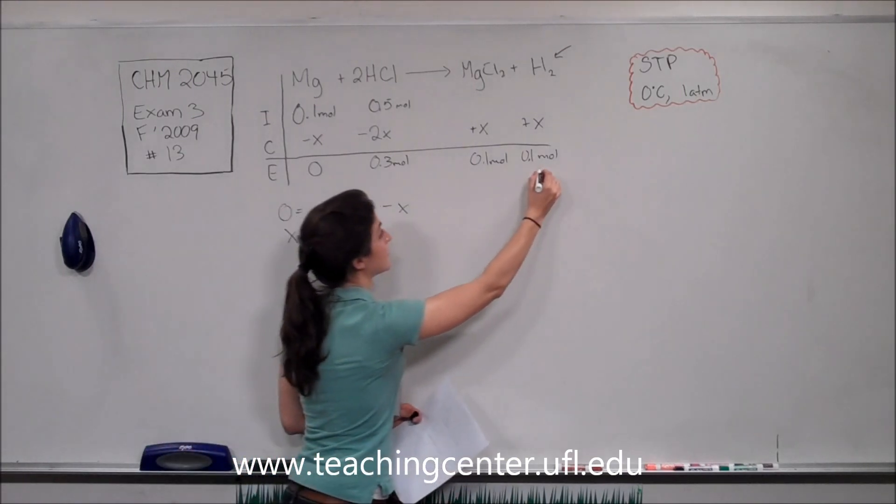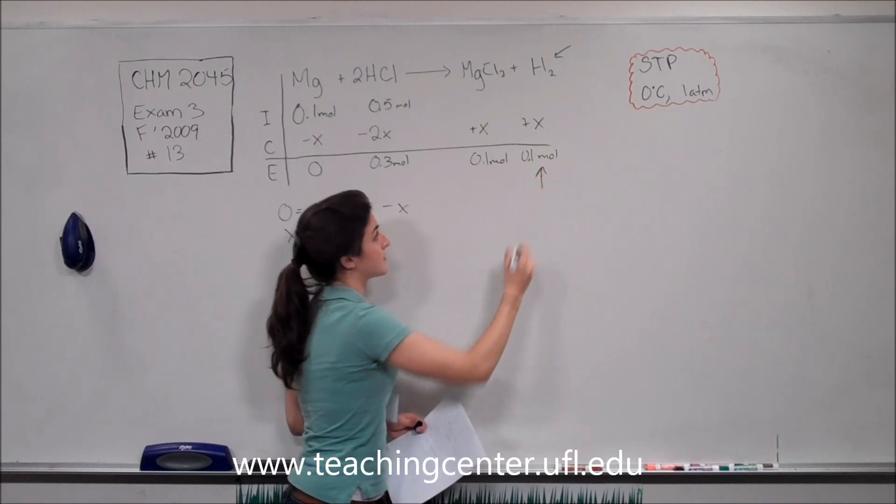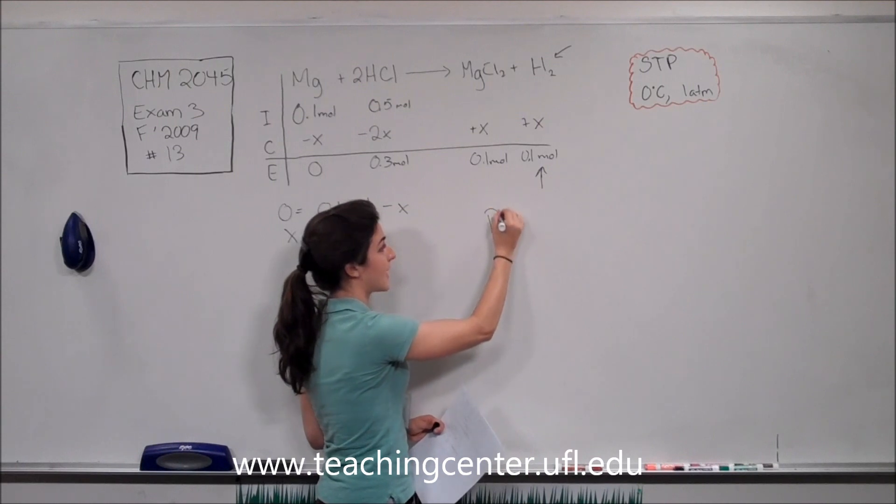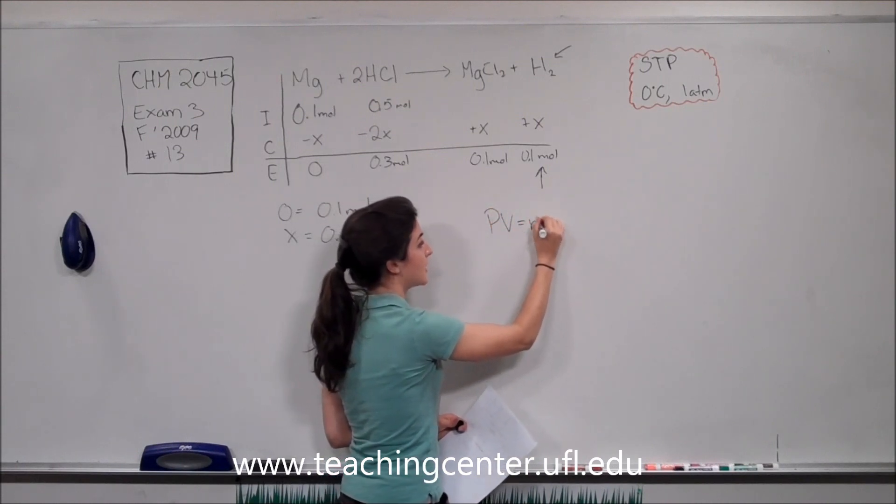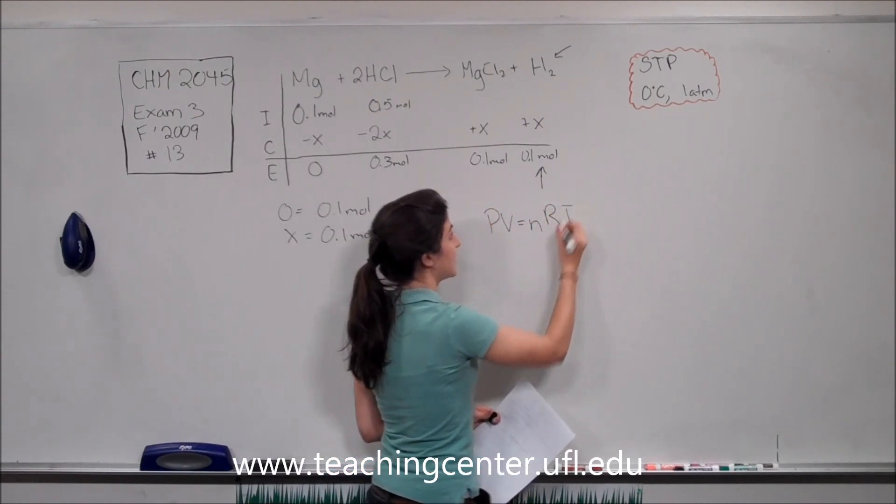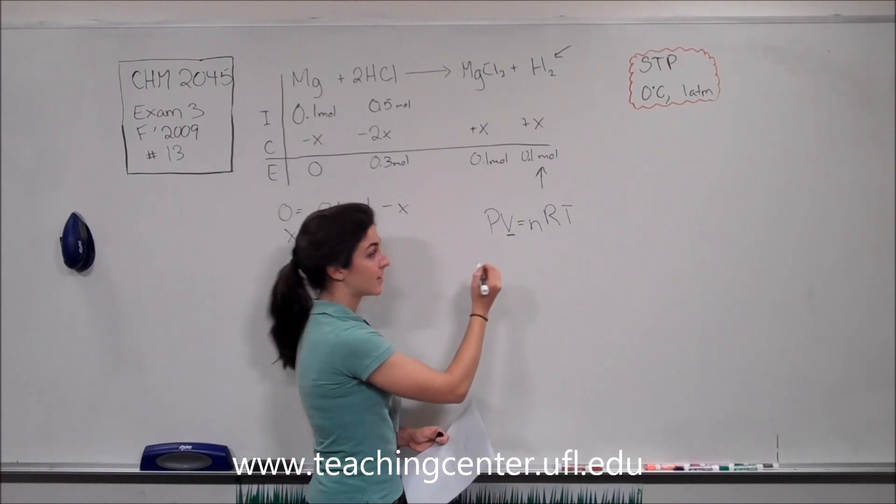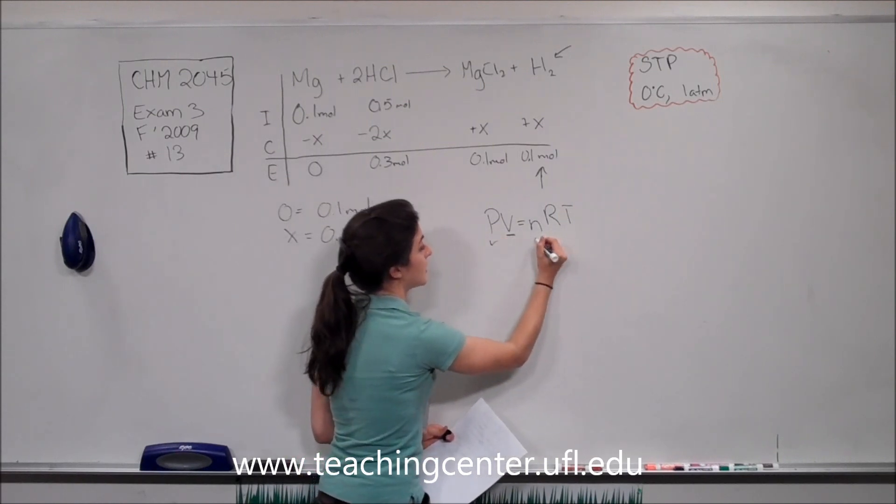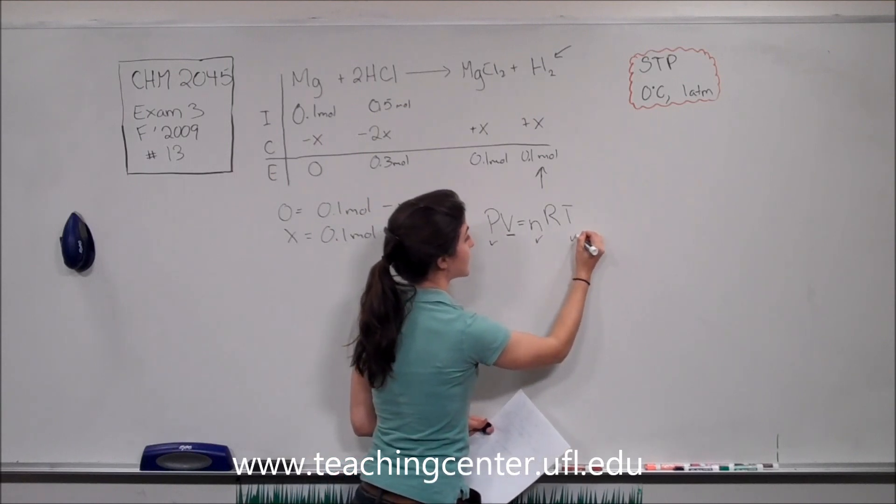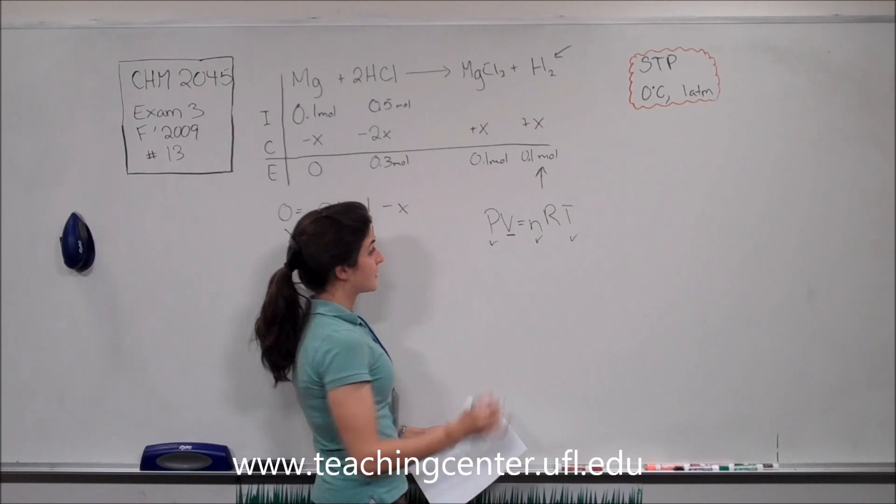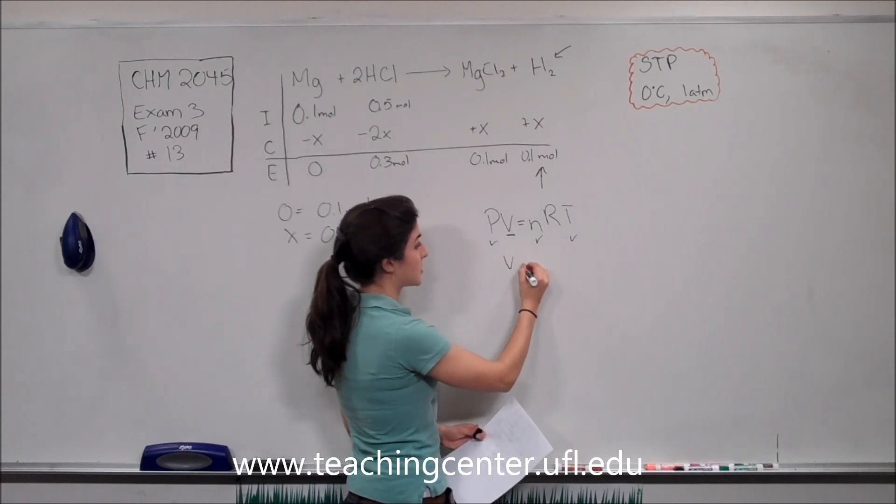And we have our equation for an ideal gas, which is PV equals nRT. We can find the volume here because we have pressure, number of moles, and temperature from STP.